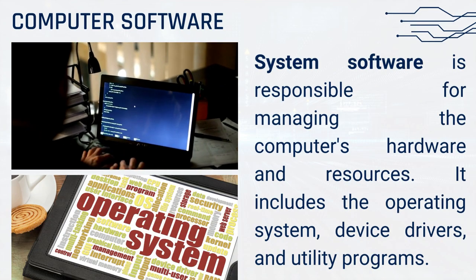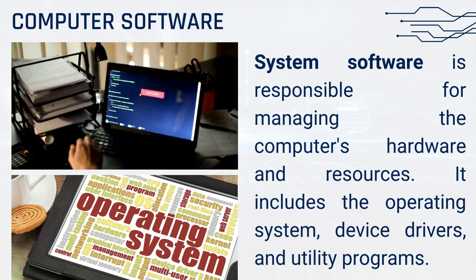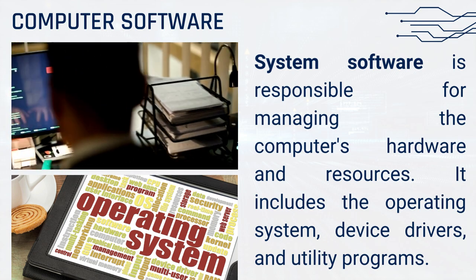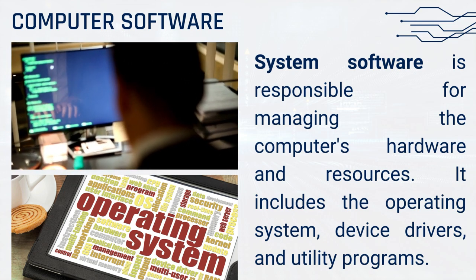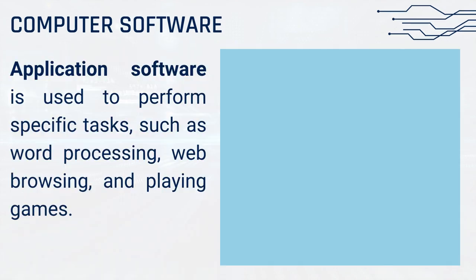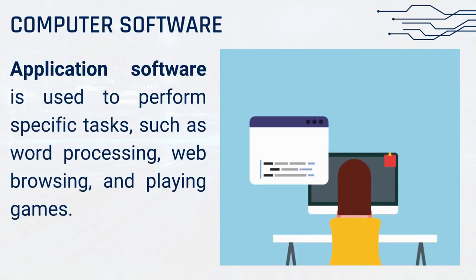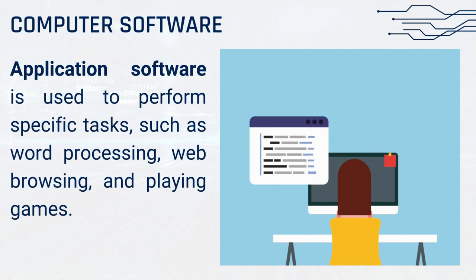System software is responsible for managing the computer's hardware and resources. It includes the operating system, device drivers, and utility programs. Application software is used to perform specific tasks, such as word processing, web browsing, and playing games.